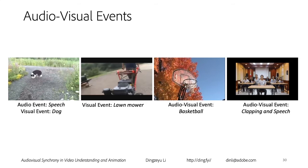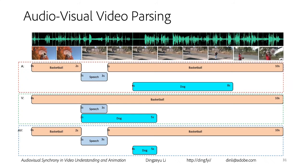The problem of audio-visual event parsing is: given a video, we want to parse its detailed structure. Our goal is to get second-level predictions. Suppose this is a basketball video around 10 seconds long — we want to know in which frames we can hear the basketball, which frames we hear speech, and which frames we hear dog barking. Similarly for visual. When we take the intersection of both the audio branch and the visual branch, we get the AV parsing result.